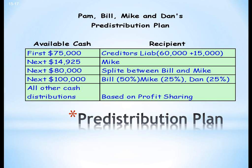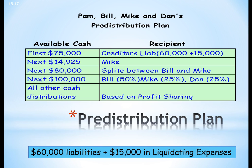Here is our predistribution plan. The first $75,000 — which is $60,000 plus $15,000 in liquidating expenses — goes to creditors. The next $14,925 goes to Mike. The next $80,000 is split between Bill and Mike. The next $100,000 goes to Bill, Mike, and Dan. And all other cash distributions are based on profit sharing. That ends this presentation, part three, of termination of partnerships. Thank you.